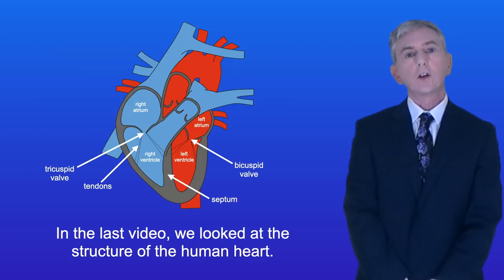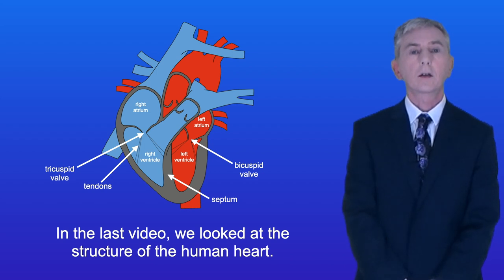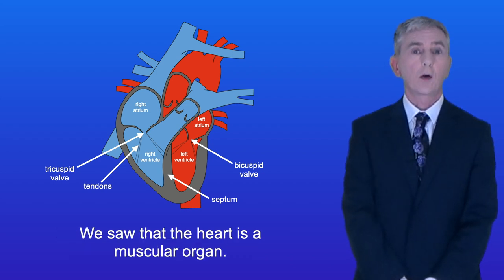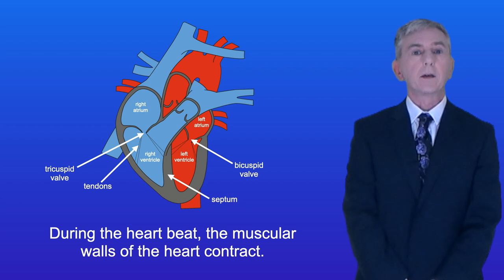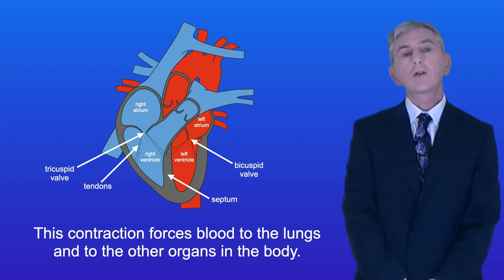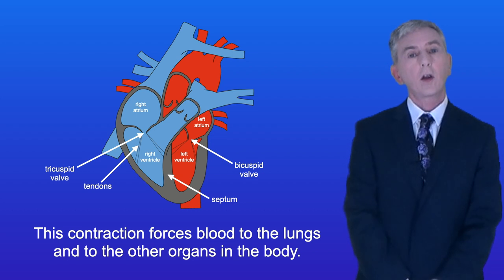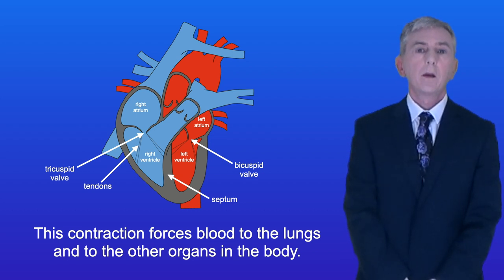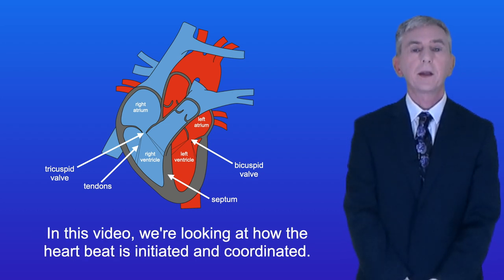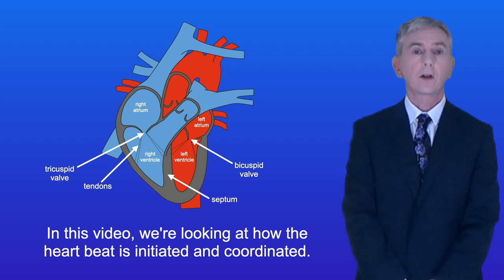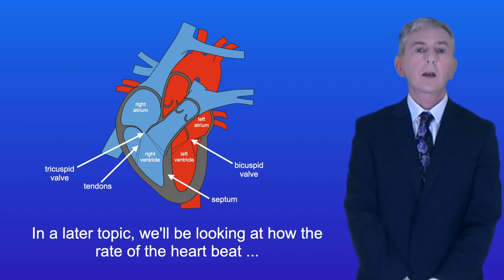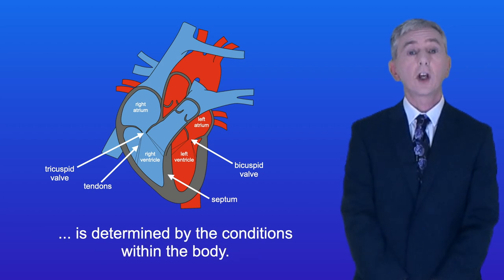In the last video we looked at the structure of the human heart and we saw that the heart is a muscular organ. During the heartbeat the muscular walls of the heart contract and this contraction forces blood to the lungs and to the other organs in the body. In this video we're looking at how the heartbeat is initiated and coordinated. In a later topic we'll be looking at how the rate of the heartbeat is determined by the conditions within the body.